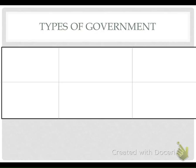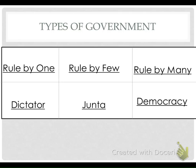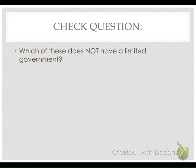So let's look at these types of governments. Rule by one — that is a dictator, like communism, and it's going to be an unlimited government. Rule by a few — that's going to be a junta, a terrible government to have, and that's also an unlimited version of government. While finally, rule by many — this is going to be a democracy where everybody has a say, and it's going to be a limited government.